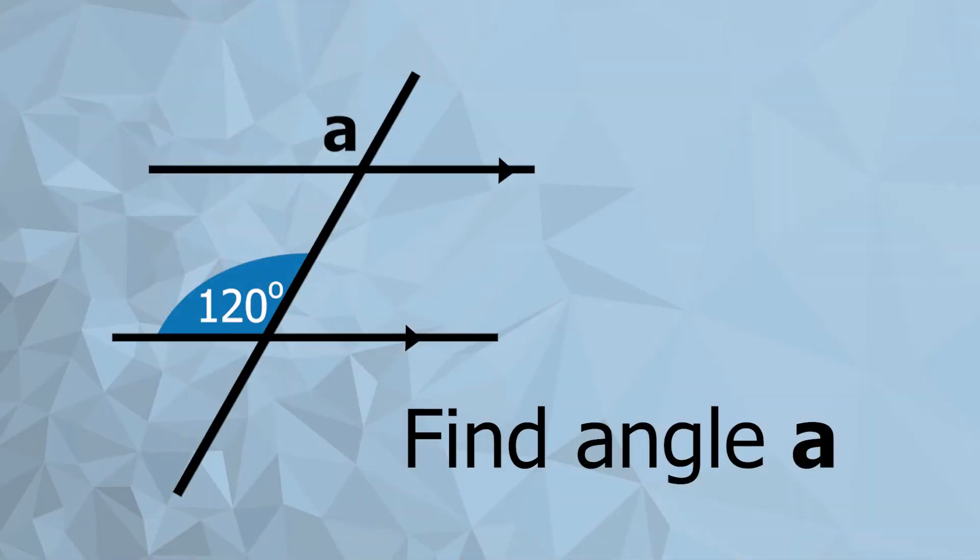Corresponding angles, alternate angles, and allied angles are just ways of describing that concept — the idea that the angles you get at the top are the exact same angles that you're going to get at the bottom. Let's look at an example and I'll show you exactly what I mean.